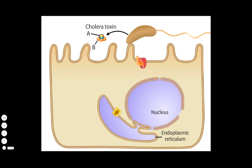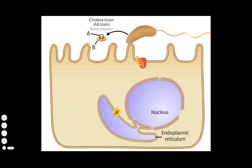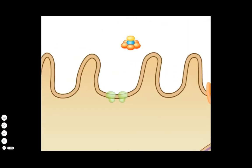Cholera toxin is structurally similar to many other bacterial toxins that are generally termed AB toxins. Because it specifically affects the intestines, cholera toxin is also called an enterotoxin. Each of the five B subunits binds to a glycolipid called ganglioside GM1 on the intestinal cell membranes. In this way, cholera toxin binds tightly to intestinal epithelial cells.